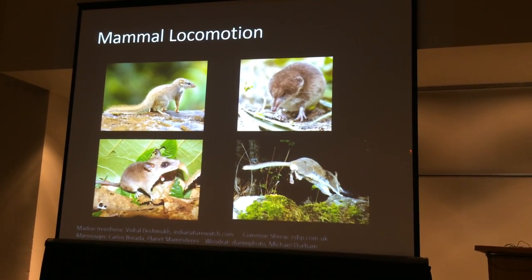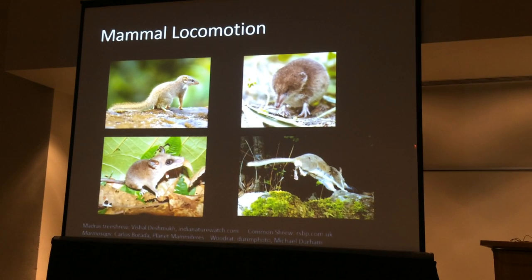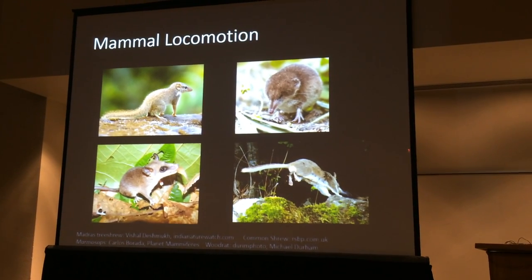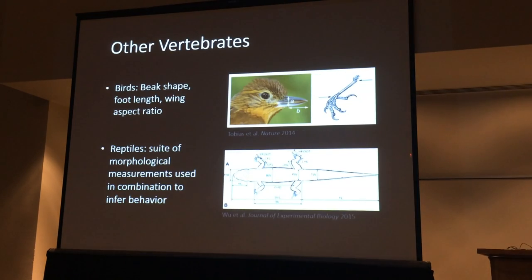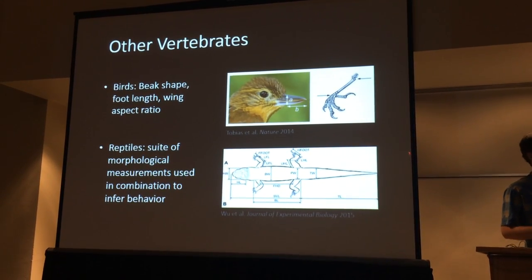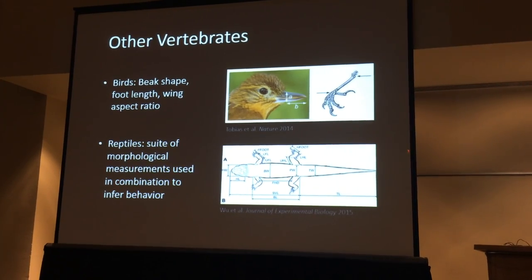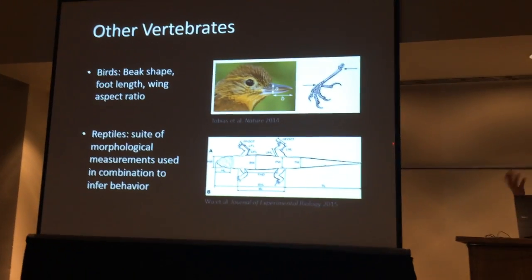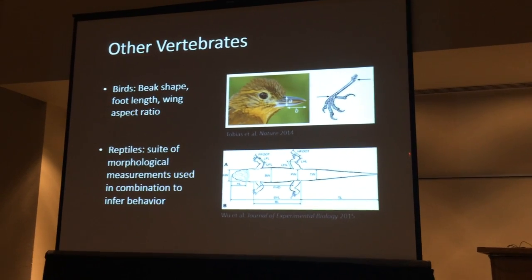So how do we begin to understand a little bit about this? The idea is to add in some behavioral information, morphology, and ecology to the mix. In other vertebrate systems we have a nice suite of morphological measurements that are commonly used to explain a little bit about the interaction with morphology and behavior and ecology.